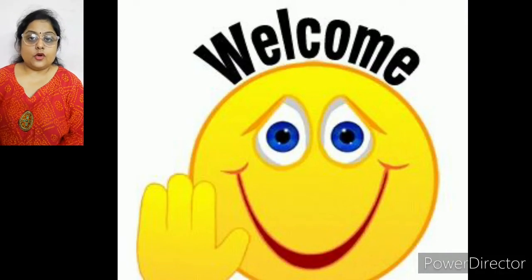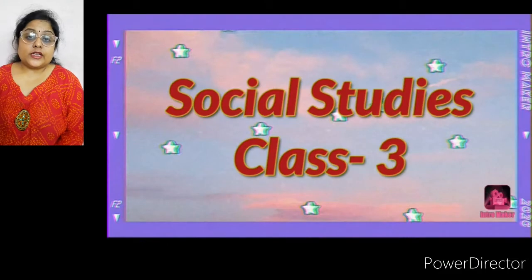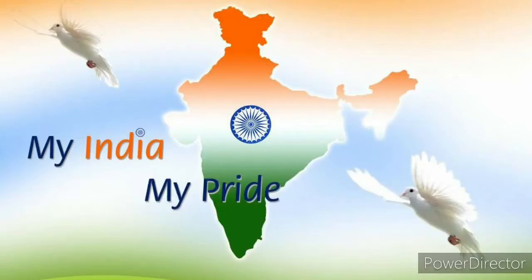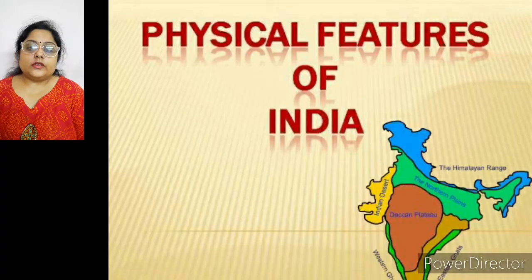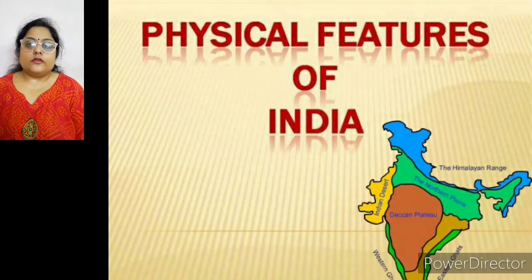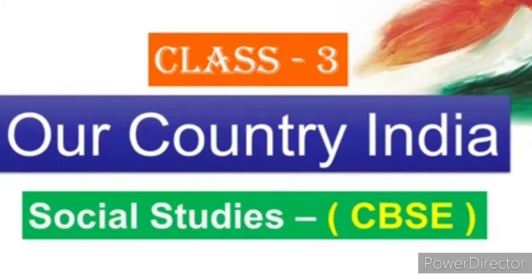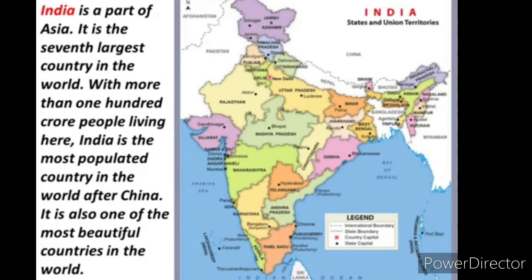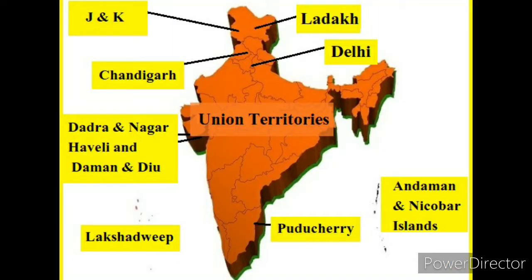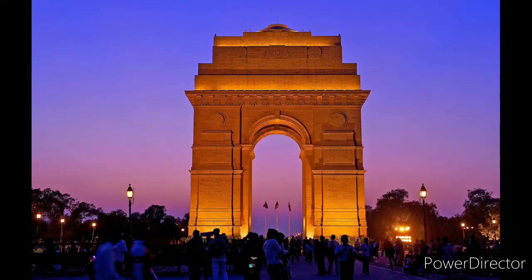Hello students, I hope you all are fine. Today we discuss about our motherland, our country India. In this chapter, we discuss about the physical features of India. India, our motherland, is the seventh largest country in the world. It has a population of around 135 crores. India is divided into different states and Union territories, and New Delhi is the capital of India.